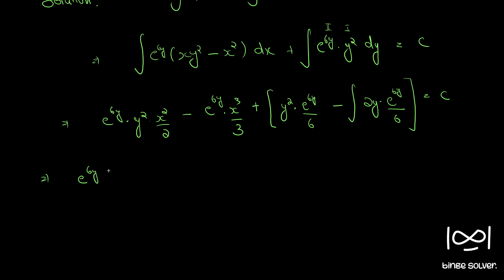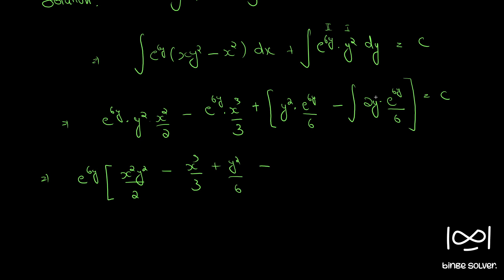Taking e^(6y) as a common factor, we have e^(6y) times [x²y²/2 - x³/3 + y²/6]. We then apply integration by parts again to the remaining integral, giving y·(e^(6y)/6) minus the integral of e^(6y)/6 dy.